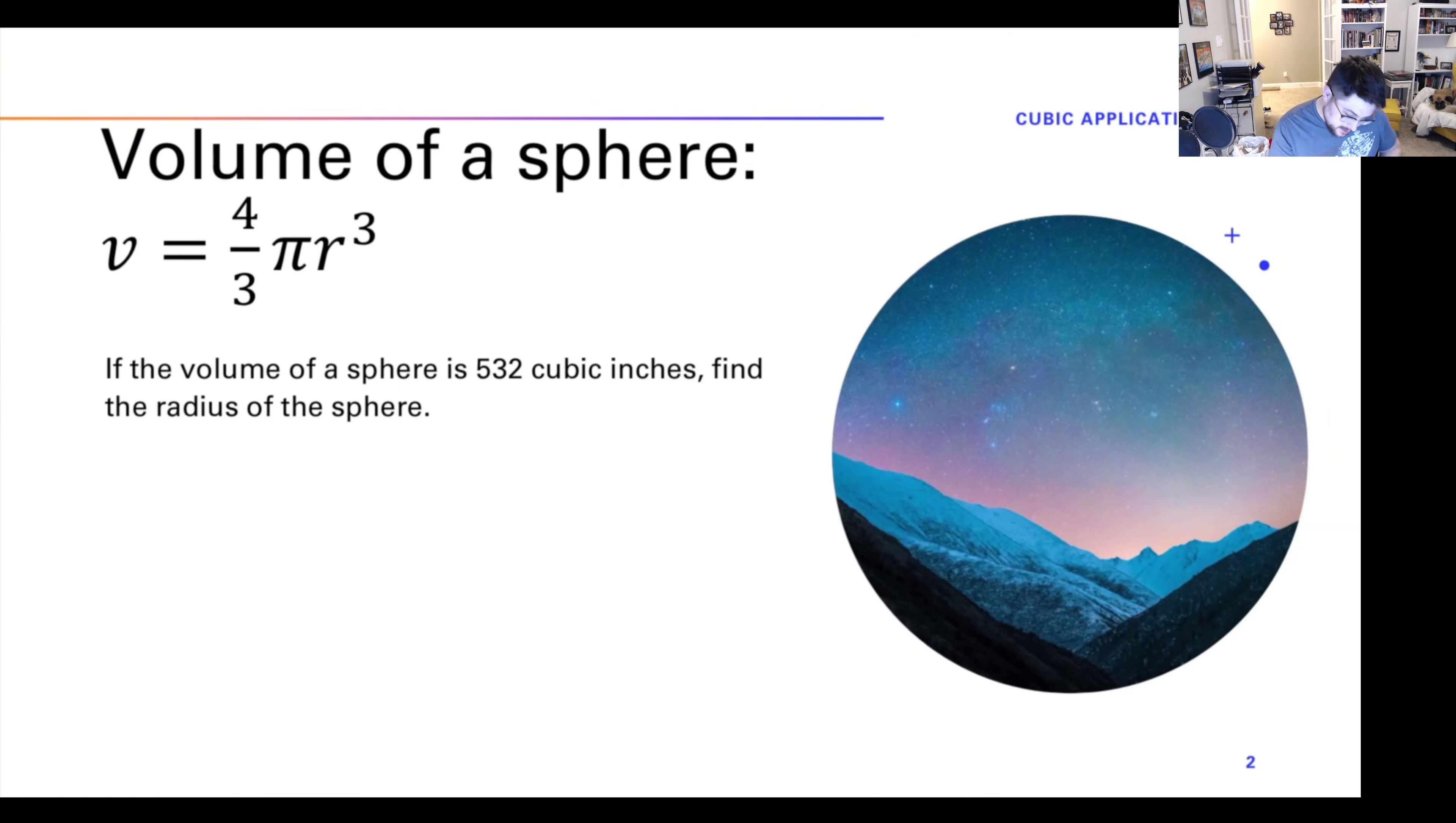So volume of a sphere, 432 cubic inches, let's find the radius. How do we do that? Well, let's plug stuff in. We know that this is volume, so let's make 532 equal four thirds pi r cubed. Now we want to solve for r. First thing we need to get rid of all of this stuff because the only thing cubed is r.